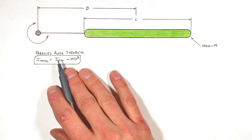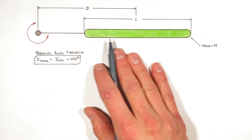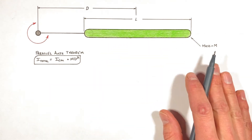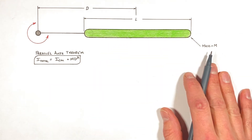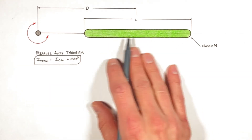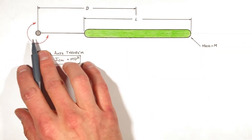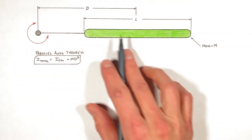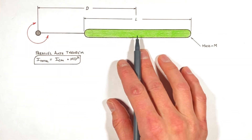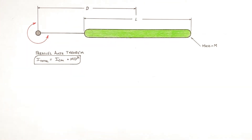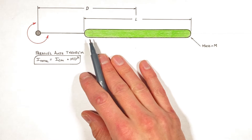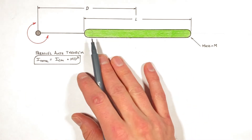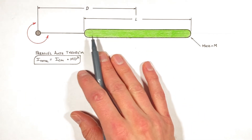To do this we're going to take a long thin rod that has some length l and some mass m, and we're going to rotate it around some point or axis which is d away from the center of the rod.